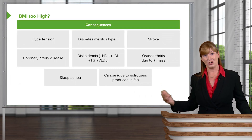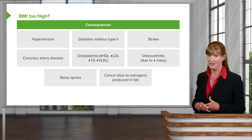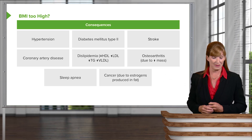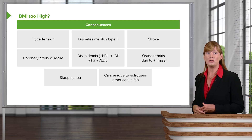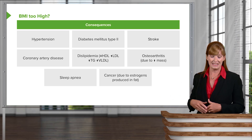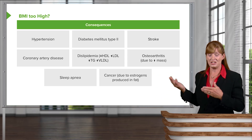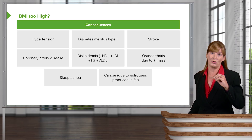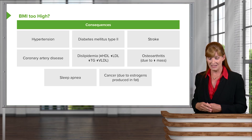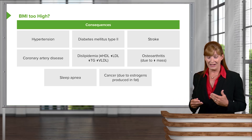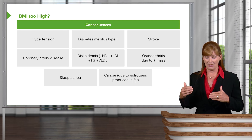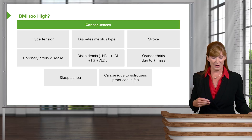What are some consequences of BMI being too high? Hypertension, type 2 diabetes, increased incidence of stroke, coronary heart disease, and dyslipidemia — where HDL or good lipoproteins drop, LDLs or bad lipoproteins increase, triglycerides increase, and very low density lipoproteins increase. All of these are consequences to keep in mind and are certainly responsible for knowing for tests.